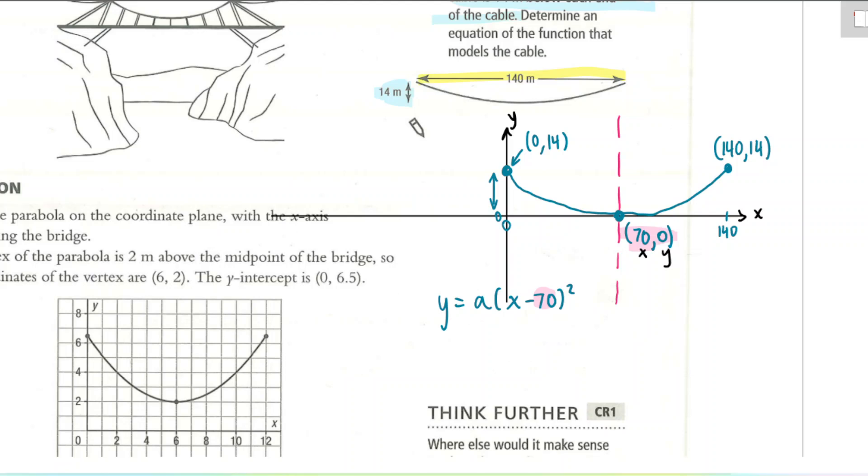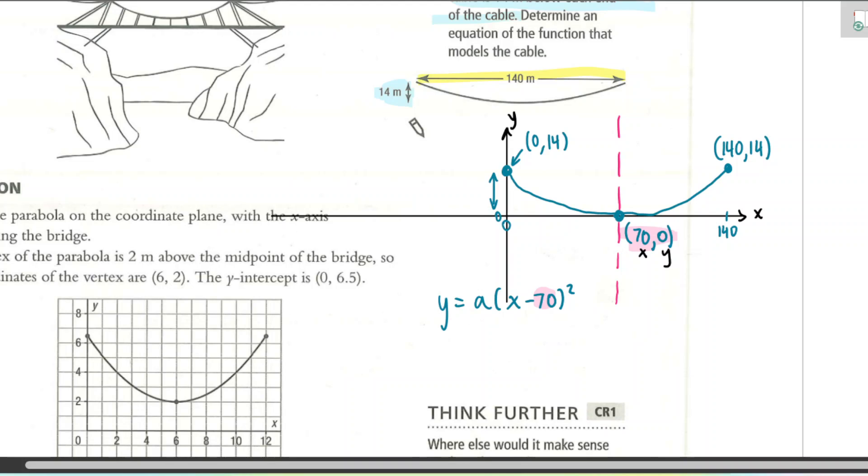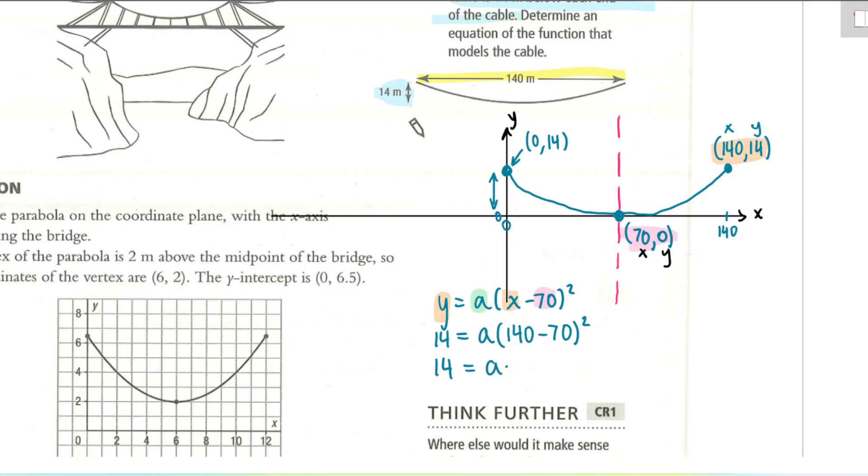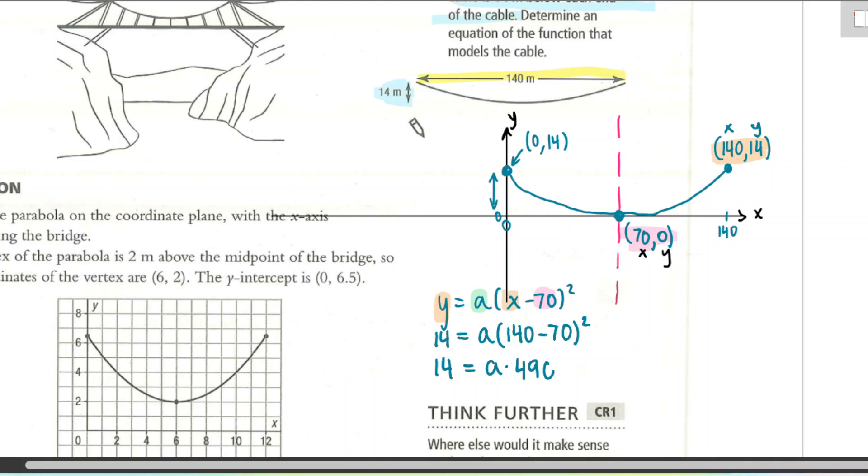And now we take either point, doesn't matter which one. I'm going to just pick this one arbitrarily. And I'm going to plug that x and that y value into the graph in order to determine a. So the x will be replaced with 140 and the y will be replaced with 14. So we're going to have 14 equals a times 140 minus 70 squared. Let's evaluate that bracket there. 14 equals a times. So just in the calculator, I'm going to type in 140 minus 70 squared. I should be able to do that in my head, but that's okay. 4,900. And I'm going to divide by 4,900.